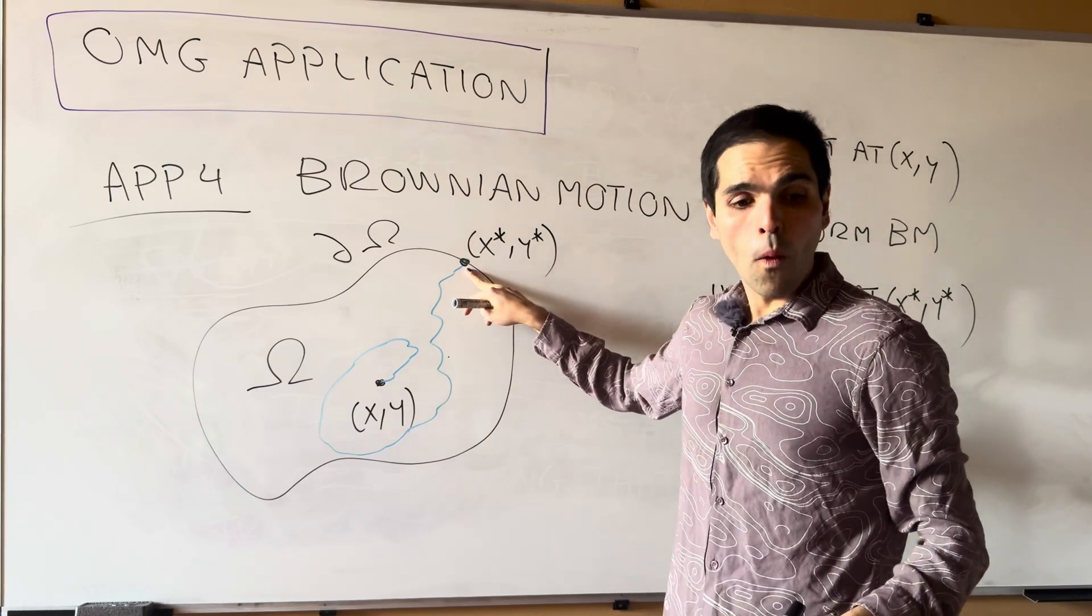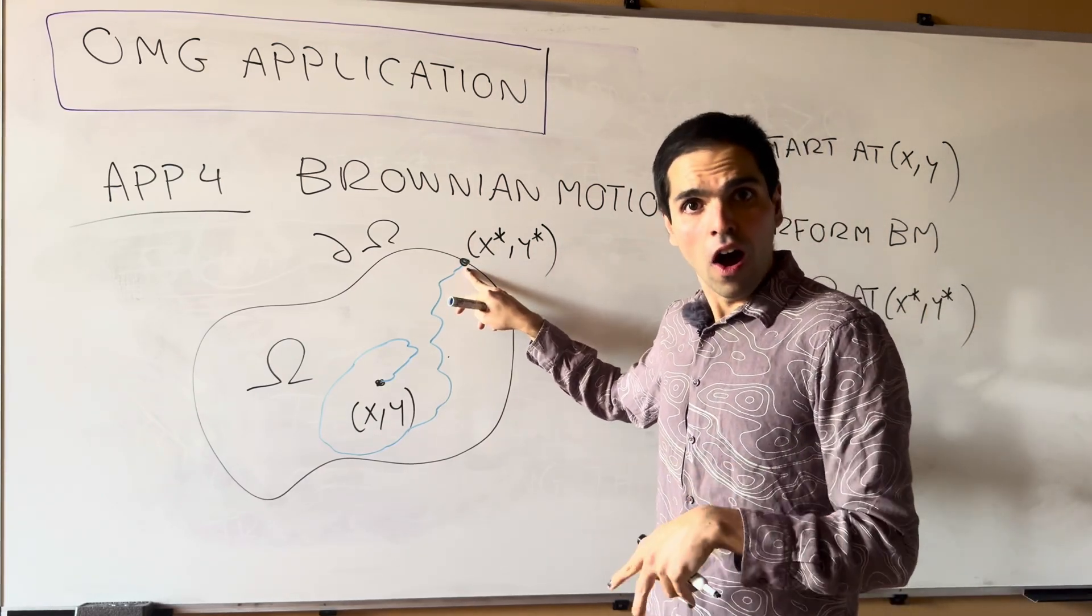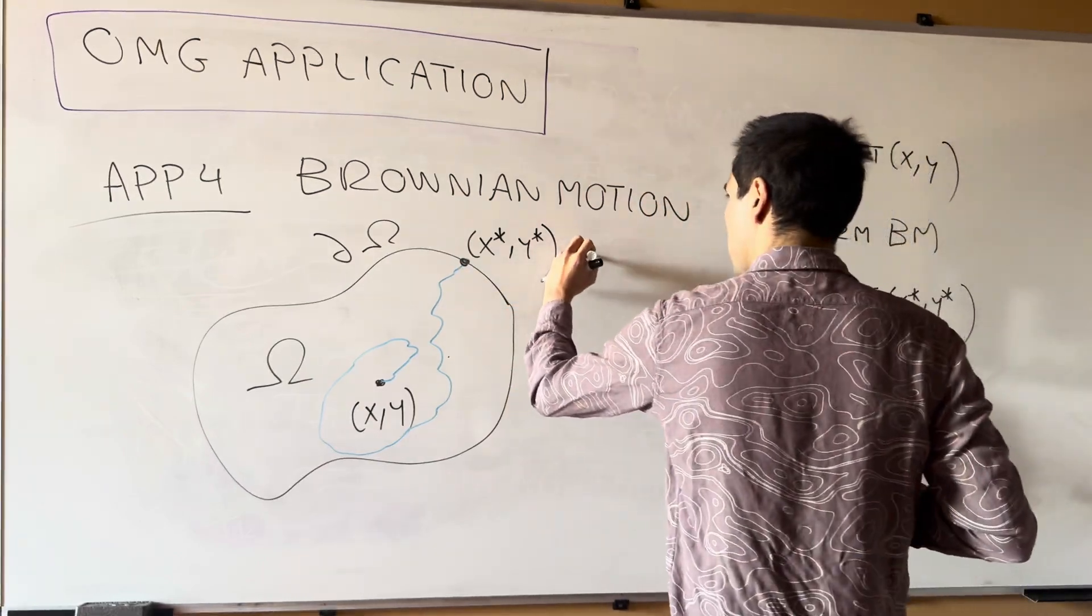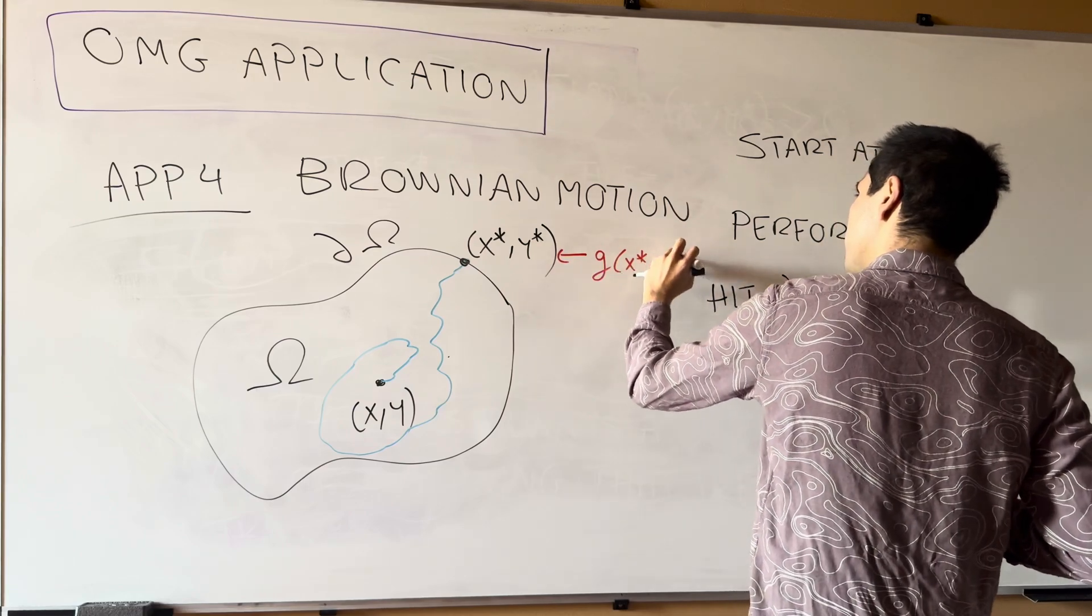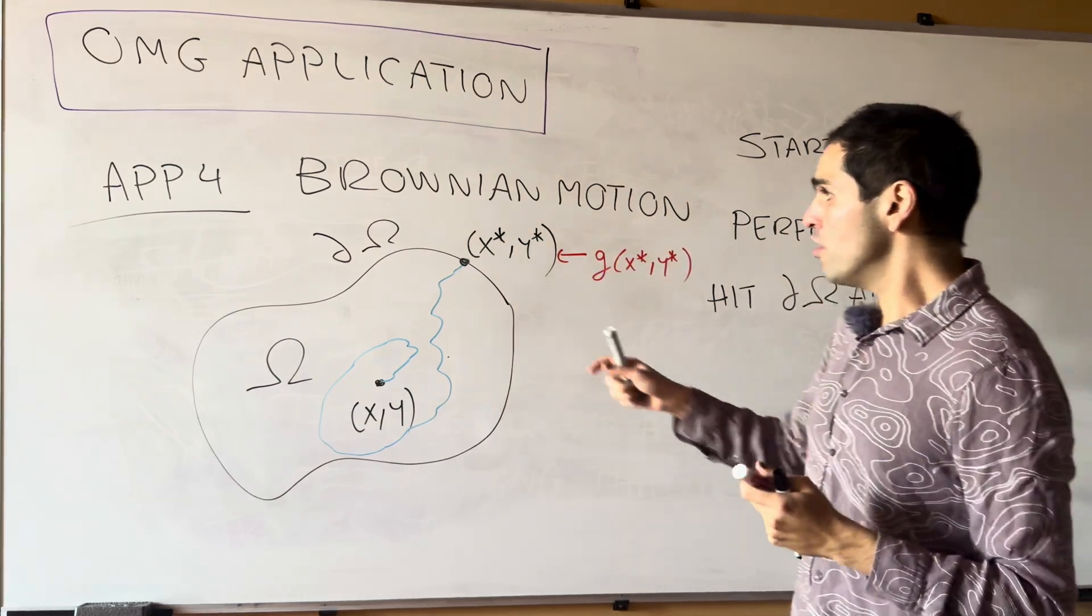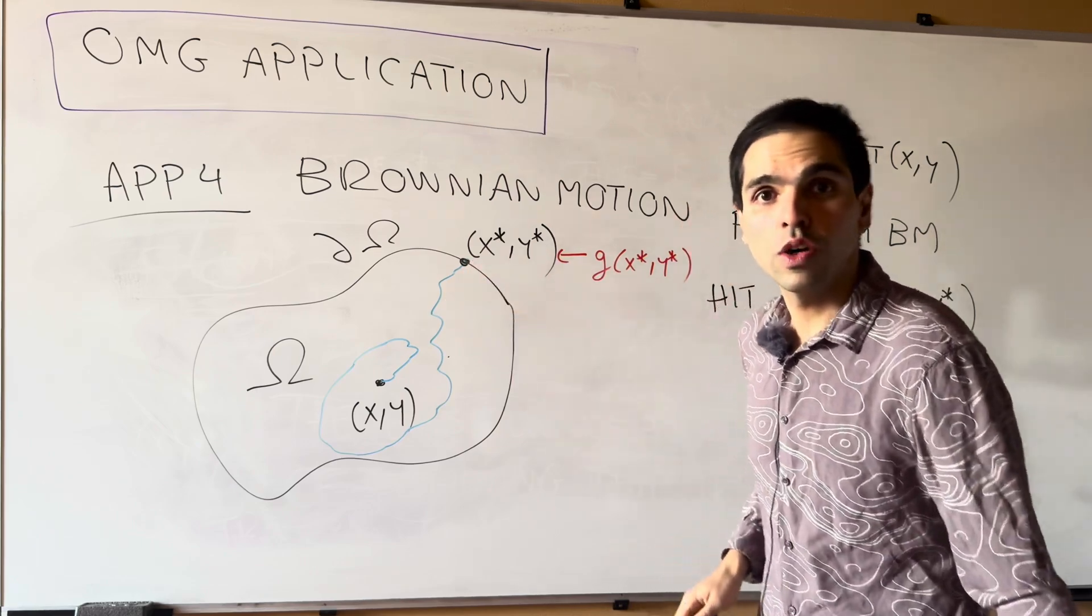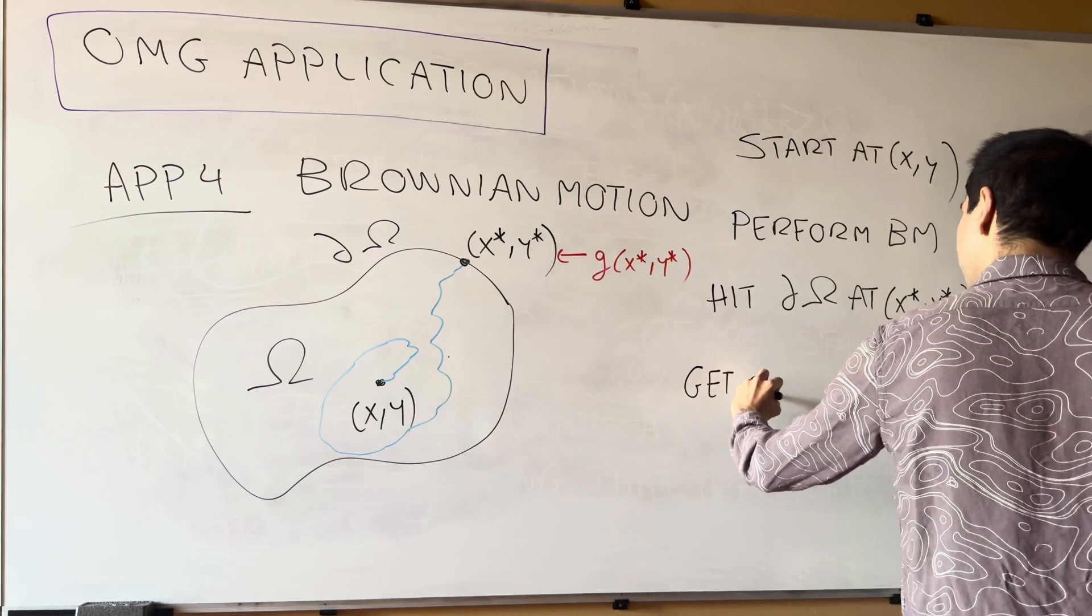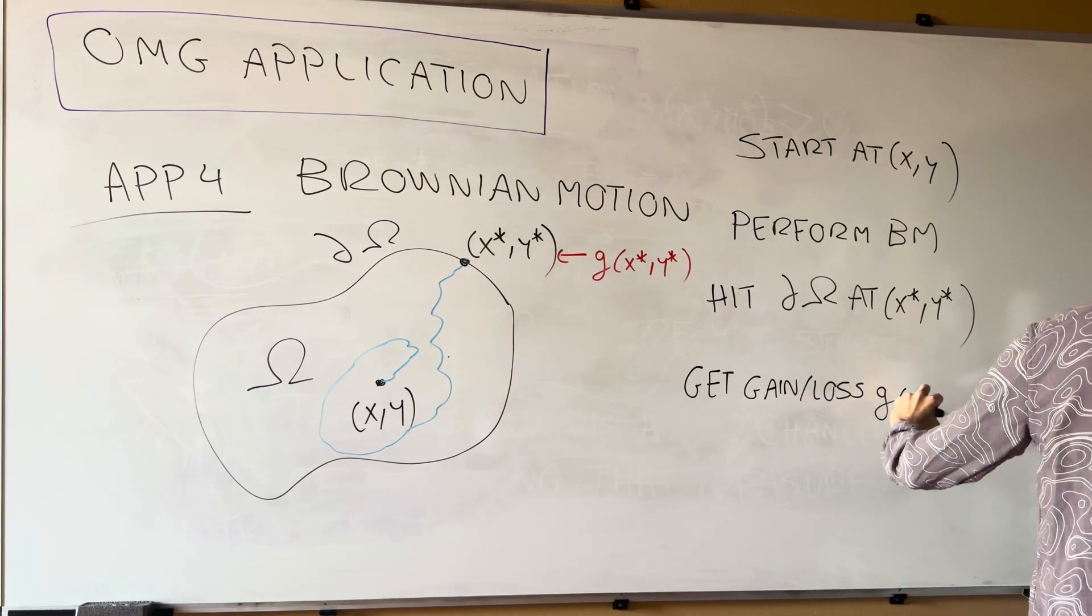And at this point, you will either get a gain or a loss, g of x star y star. And think of this, either the price you have to pay to the insurance for hitting the wall at this point. So get gain or loss, g of x star y star.